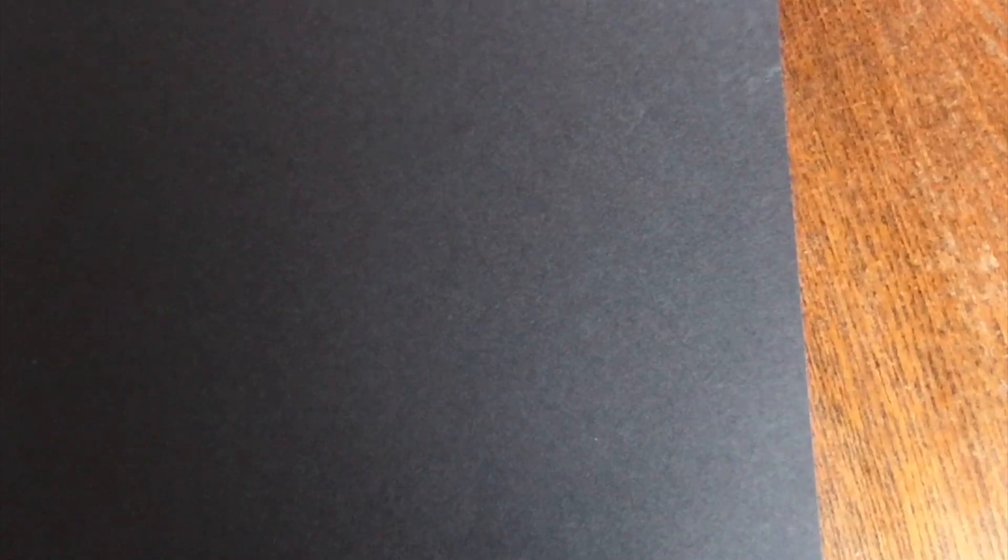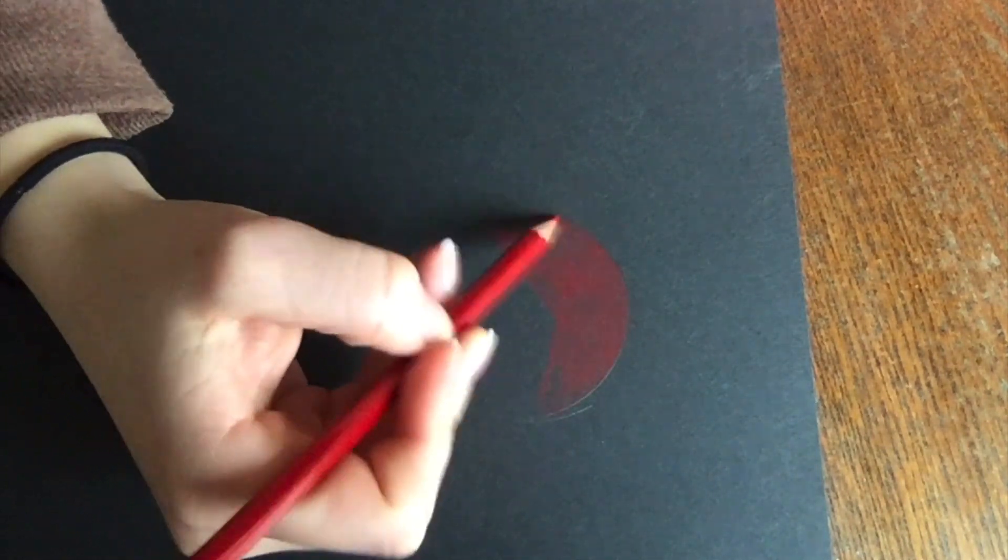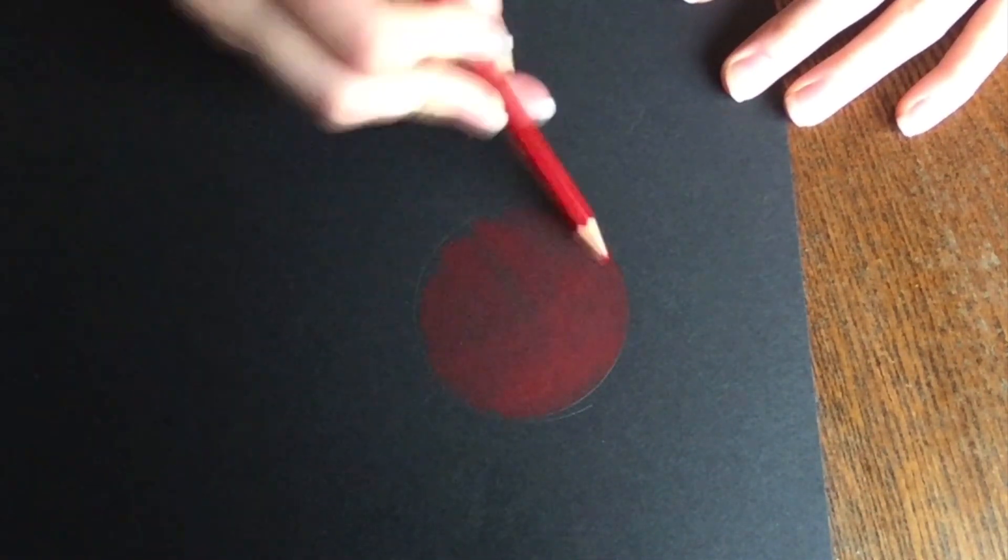Now, like I said, if you don't have chalk pastels, that's fine. You can still do this project. So I'm going to show you quick how to do the same thing just using colored pencils. Same three steps. You're going to get a base color. So I'm going to color the entire thing, my mid-tone.